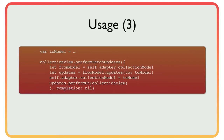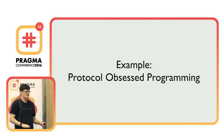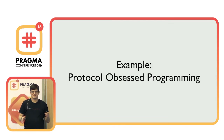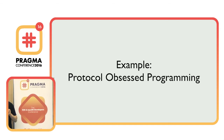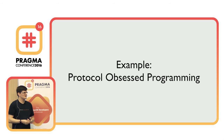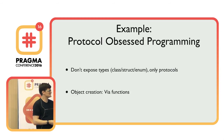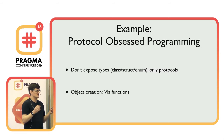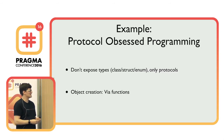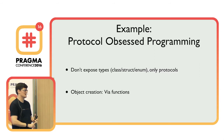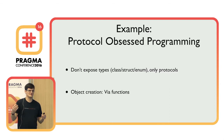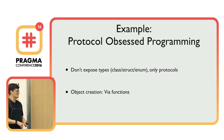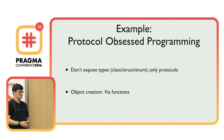That was the example without any protocols. Now we do the same with protocol obsession. Protocol obsession, for me, means trying not to expose any concrete types — no classes, structs, or enums publicly. I only want to expose protocols. Whenever something public is a struct, it's wrong. Whenever it's a class, it's wrong. Whenever it's an enum, it's wrong. Just try to only expose protocols. For object construction, I'll use module-level functions.